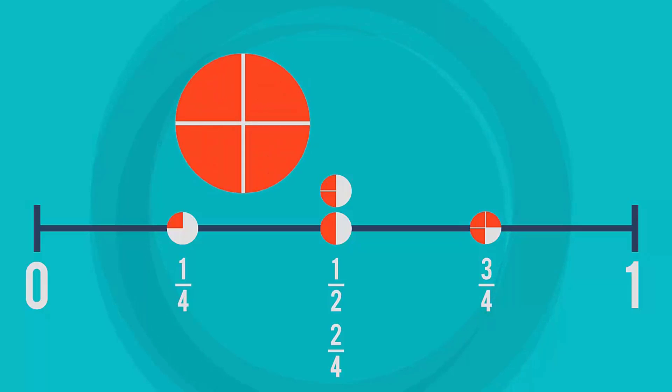Finally, can you place this fraction? Four out of four equal parts. That's copycat one. Where should it go? That's right, over here above the one.